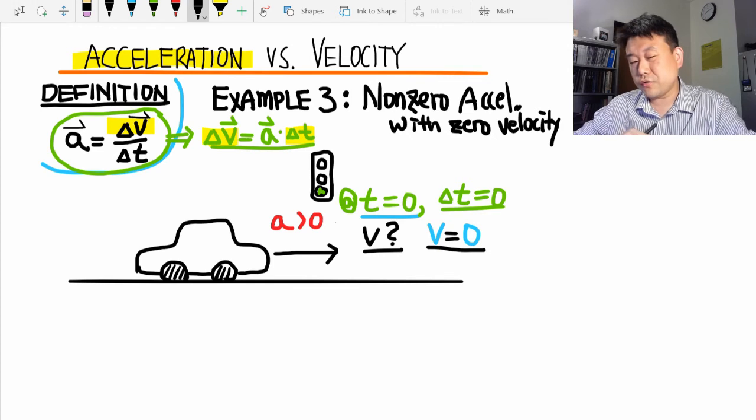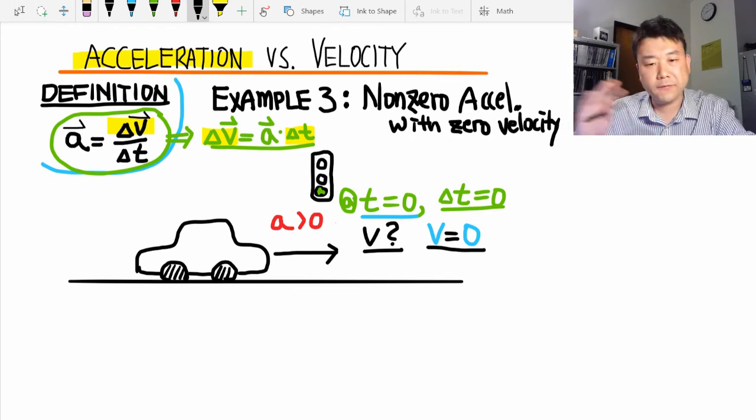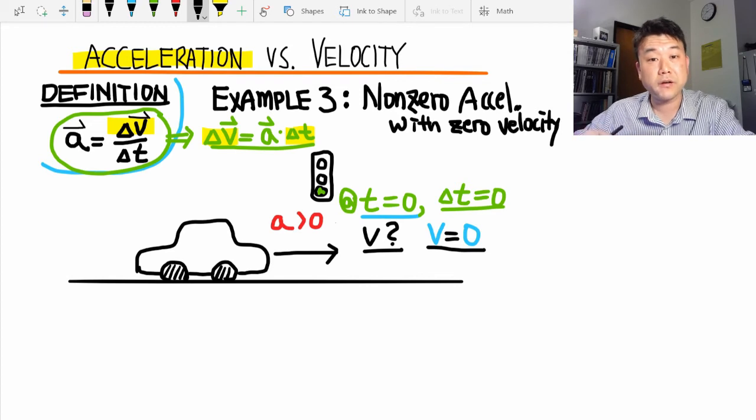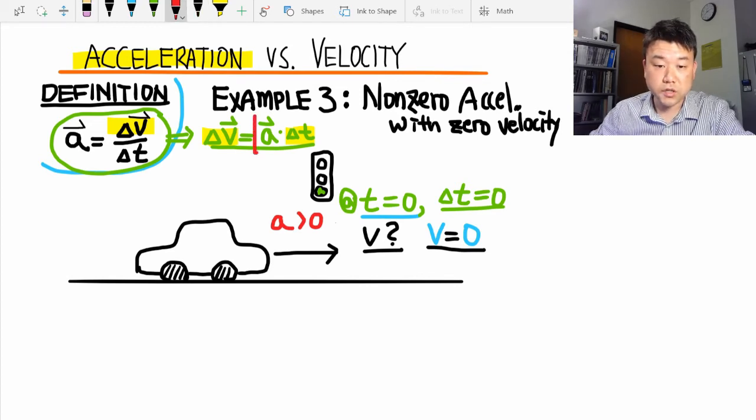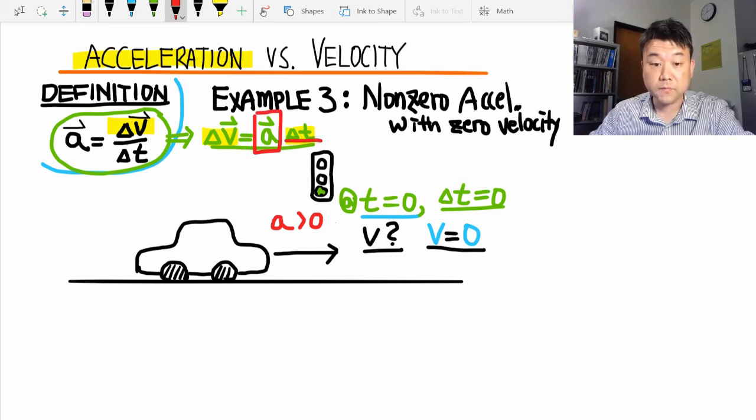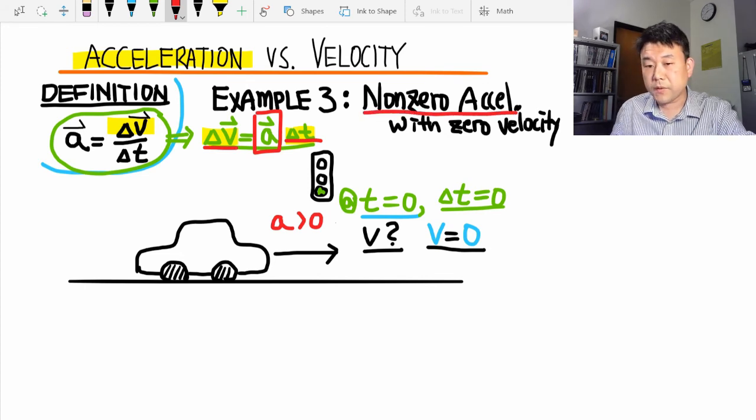So this is the first very common everyday experience where you feel the motion, you have non-zero acceleration, but you have zero velocity. Now, what you should notice is that this moment is very fleeting. Another moment, a second, fraction of a second later, your velocity won't be zero. Because with non-zero acceleration, as you accumulate change of time, you will accumulate change in velocity. So all these examples will be very momentary, fleeting.